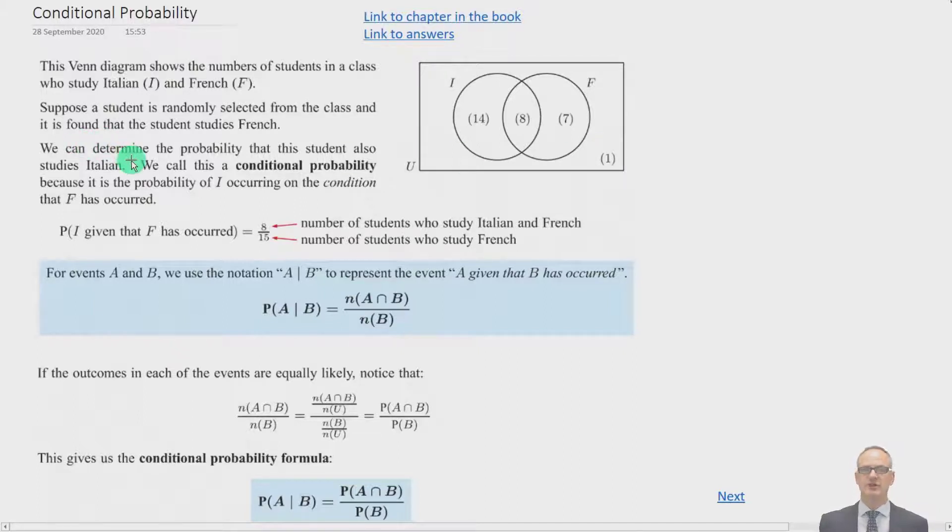Now conditional probability is when you know something has happened. In this example, the first student randomly selected from the class is found to study French. We know they study French and we want to look at the probability of them studying Italian knowing that they've studied French. If we know they've studied French, we're dealing with this area here, only 15 students, the 8 plus the 7. Therefore the number of Italian students out of the ones that study French is 8 fifteenths.